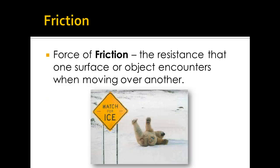In this unit, students will learn that friction is a force that slows down or stops objects. Students learn that the amount of friction between two surfaces depends on how rough or smooth they are. Friction is a force that always acts to oppose motion. For example, as a ball rolls through grass, the grass pulls on the ball, slowing it down. Inversely, walking on an icy sidewalk is difficult because the ice is smooth, so the pull of friction is small and things slide easily over it.